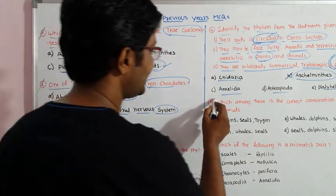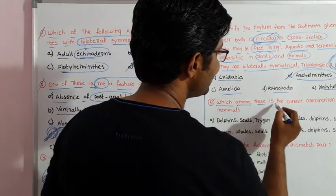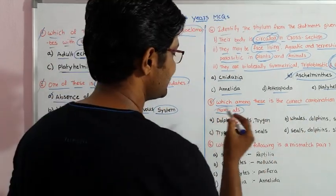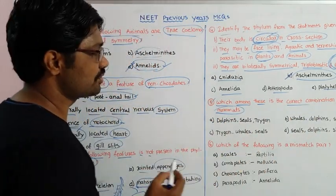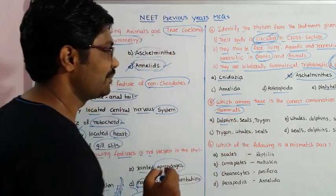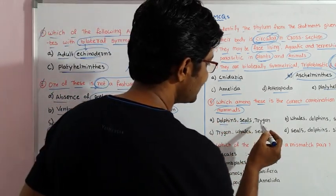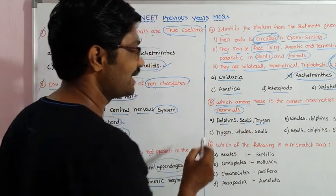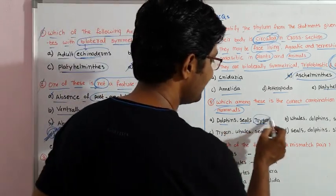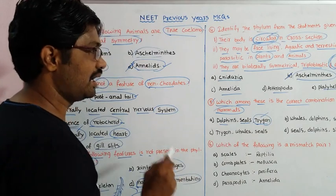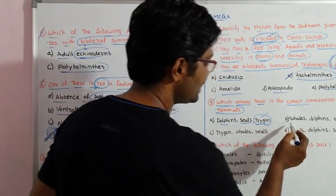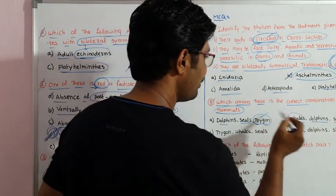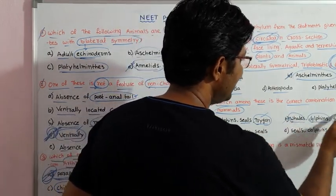Next question: Which among these is the correct combination of aquatic mammals? Let's check the options. Option one includes dolphins, seals, and Trygon — but Trygon is a fish, so this is not correct. Option B includes whales, dolphins, and seals — these are all aquatic mammals.